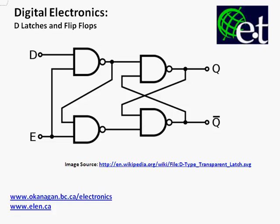Hi there, it's David Williams, and the topic of today's video is D-latches and D-flip-flops. We can see right here the logic gate implementation of a gated D-latch. We've got our D-input and this E-input, which is the enable signal. We've got our Q-output and the Q-bar output, which are going to be opposites of each other. We see we've got four NAND gates, plus some of the output — the Q and Q-bar — being fed back into those logic gates. Today we're just going to look at the functionality of D-latches and D-flip-flops.